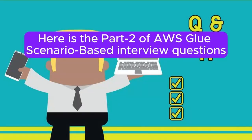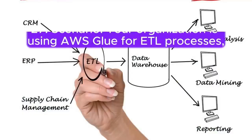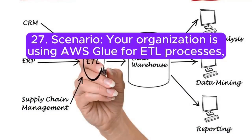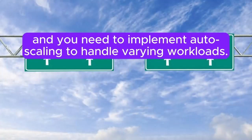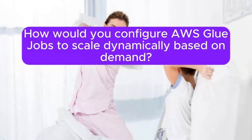Here is part 2 of AWS Glue scenario-based interview questions. Question 27: Your organization is using AWS Glue for ETL processes, and you need to implement auto-scaling to handle varying workloads. How would you configure AWS Glue jobs to scale dynamically based on demand?